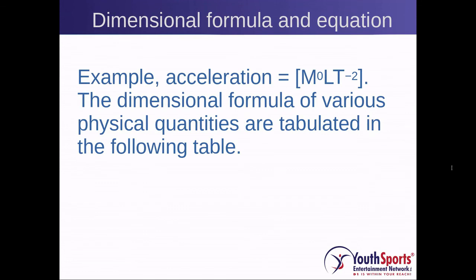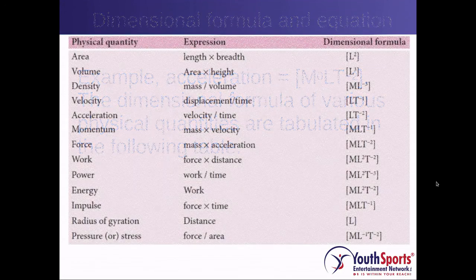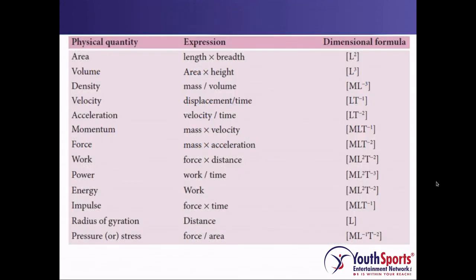The dimensional formulas of various physical quantities are shown in the following table. Here we have the physical quantities — for example, area, volume, and density — along with the expressions in dimensions, such as length times breadth for area and area multiplied by height for volume, and the corresponding dimensional formula. For example, area is L squared and volume is L cubed.